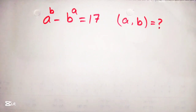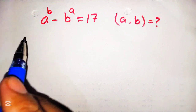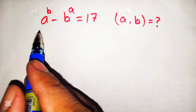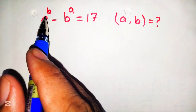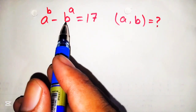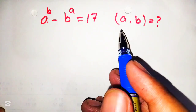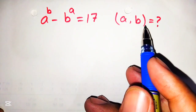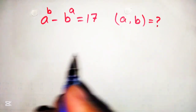Hello guys, welcome to my YouTube channel Olimpied Edge, hopefully you will be fine. Today we are going to solve a very nice algebraic exponential equation which is given as a raised to power b minus b raised to power a is equal to 17, and we have to find the value of a and b. So let's start.